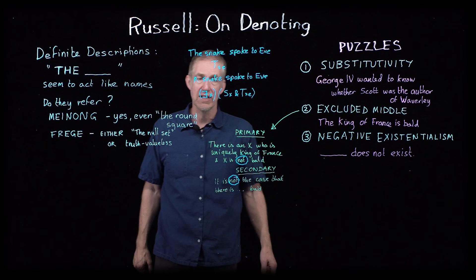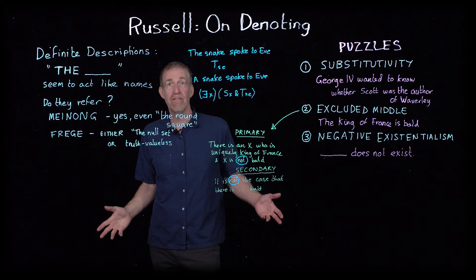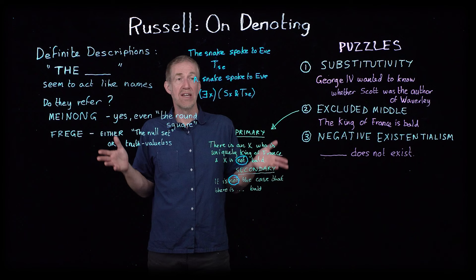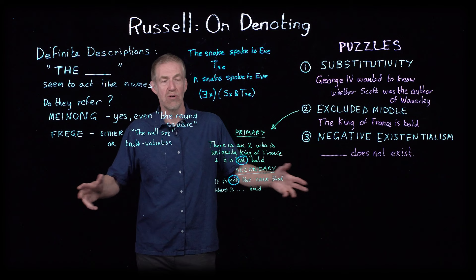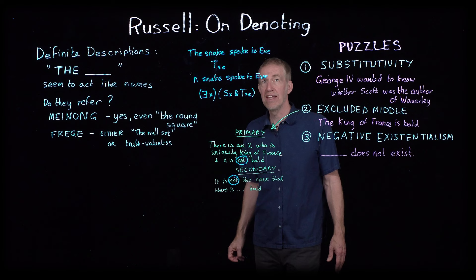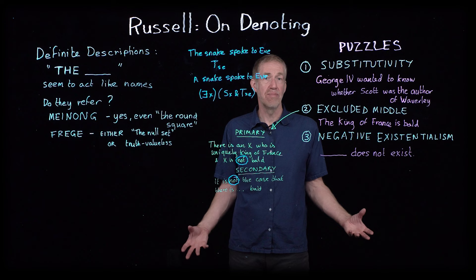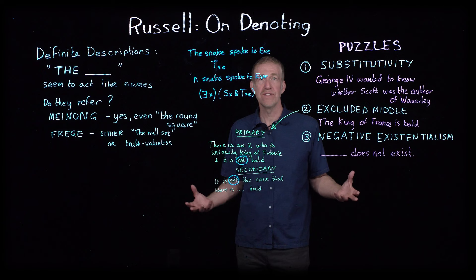Meinong suggested that even unicorns exist because 'a unicorn has a horn' is a meaningful sentence, and in fact we would say it is true. The only way we can make sense of it being true is if there really are unicorns for that sentence to pick out. We know there aren't unicorns in the physical world, so they have this kind of ethereal, extra existence. Frege also said propositions and numbers have a kind of existence — sometimes to make sense of the world you have to expand your ontology, meaning the things you think exist, beyond the physical world.